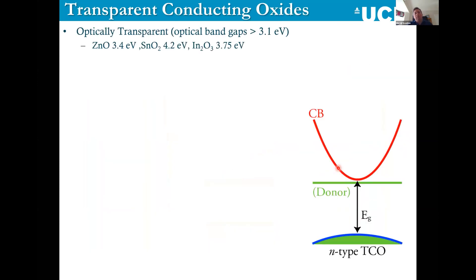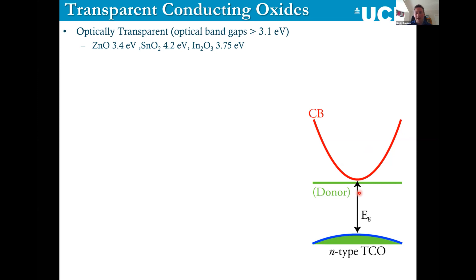How do they work? These materials are optically transparent — they have an optical band gap bigger than 3.1 eV, so light shone on the material will not excite an electron from the valence band to the conduction band; light simply passes through. They're normally oxide systems featuring post-transition metal cations: zinc oxide with a 3.4 eV band gap, tin dioxide with 4.2 eV, and indium oxide with 3.75 eV. You generally want a very dispersive conduction band minimum, a large valence-to-conduction band separation, and donor dopants as close to the conduction band minimum as possible for high conductivity.